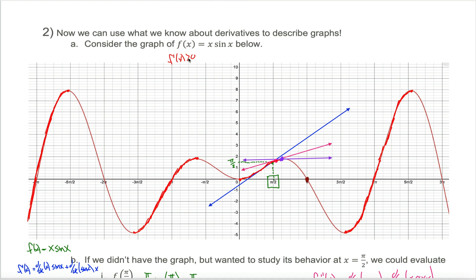Figuring out when your first derivative is positive is not that hard — it's just when your graph is increasing. It's the parts shaded in red here. All the parts that are not shaded in bold red are when the first derivative is less than zero.